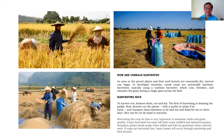For rice harvesting, the first step is draining the paddy, then farmers cut the plants with a scythe or sickle and transport them to be laid out and dried for two or three days. In Nueva Ecija before, the rice was dried along the road, but now drying stations are used — rice is bagged and brought there. There are now machines and facilities available. Harvesting the crop on time is very important to maximize yields and grain quality.